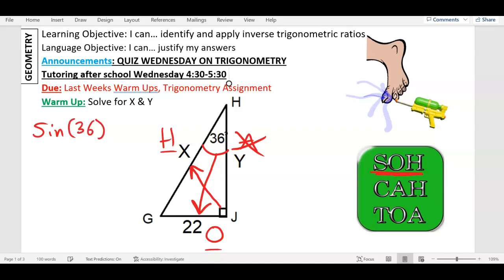36. So sine 36 equals, and it's, again, trig is, the sine is O. It's O over H, which is 22 over X.